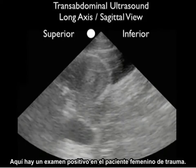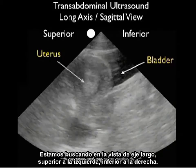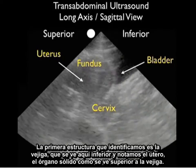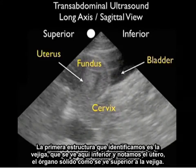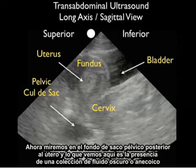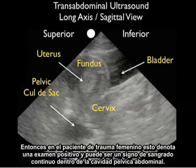Here's a positive examination in a female trauma patient. We're looking in the long axis view, superior to the left, inferior to the right. The first structure we identify is the bladder seen inferiorly, and notice the uterus — the solid organ — superior to the bladder. We note the parts of the uterus: the fundus anteriorly and the cervix more posteriorly. Now looking into the pelvic cul-de-sac immediately posterior to the uterus, we see the presence of a dark or anechoic fluid collection just posterior to the cervix within the pelvic cul-de-sac. In the female trauma patient, this denotes a positive examination and can be a sign of ongoing bleeding within the abdominal pelvic cavity.